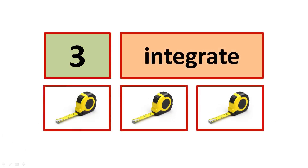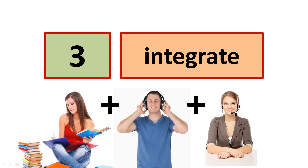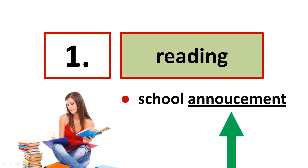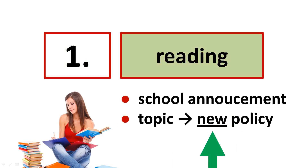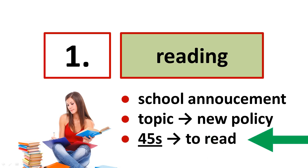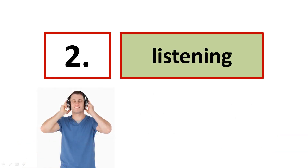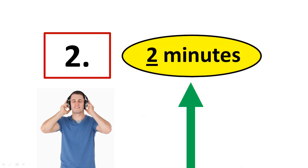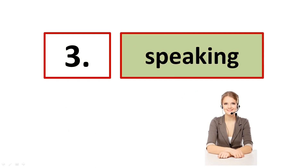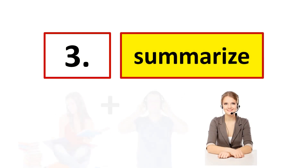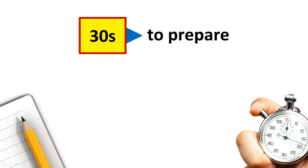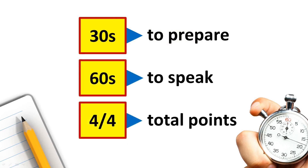Next is speaking task 3. This task measures your ability to integrate three skills: reading, listening, and speaking. Step 1 is reading — the reading will be a school announcement on a new school policy, and you will have 45 seconds to read it. Step 2 is listening — you will listen as two students debate the new school policy, lasting about two minutes. Step 3 is speaking — you will summarize how the reading and the listening topically integrate. You will have 30 seconds to prepare and 60 seconds to speak. This task is scored out of four total points.